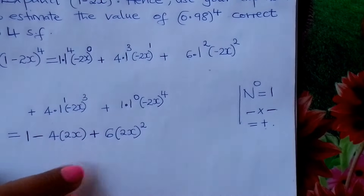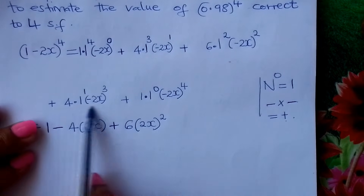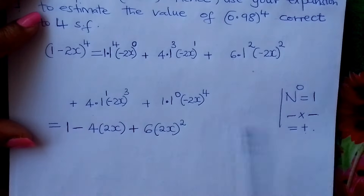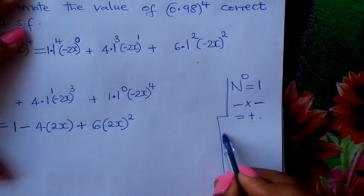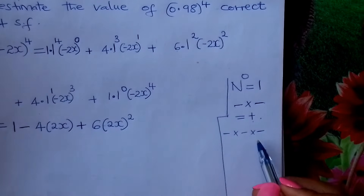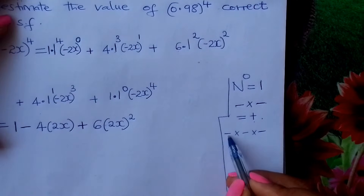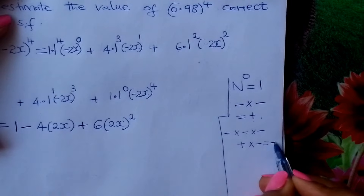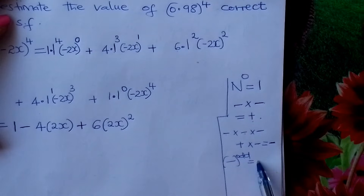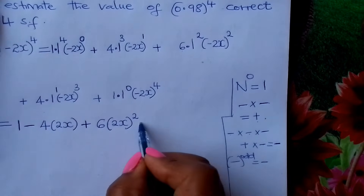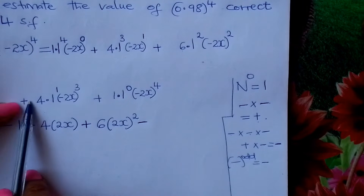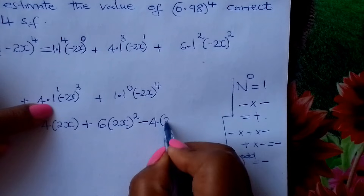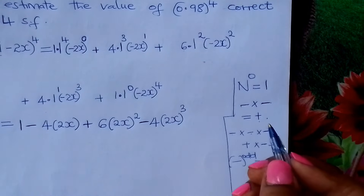Going step by step so we don't make mistakes. For the fourth term, we have 4 times 1, which is 4. Here we have negative cubed — negative times negative is positive, then positive times negative gives us negative. So negative raised to any odd power gives us negative. Negative cubed is negative, so this term is negative. We write minus 4 times (2x) cubed.